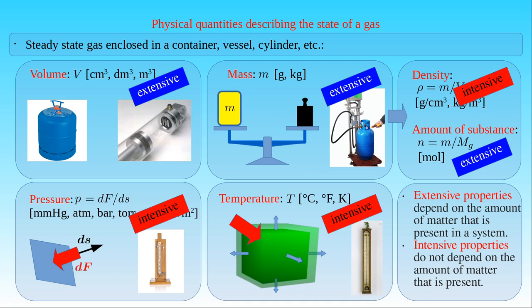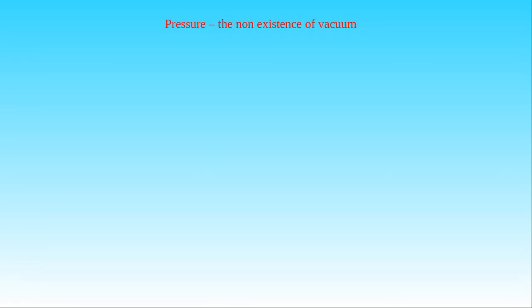Now we have introduced and classified the basic physical quantities which are used to describe the physical state of gases. It is more or less clear how to determine the extensive properties of a gas such as volume and mass. It is also straightforward to compute the density and the amount of substance, if the volume and the mass of the gas are given with its atomic or molecular weight. But pressure and temperature are intensive properties, and it is not so obvious how to measure such quantities. Therefore, we present the basic concepts related to pressure and temperature either in a historical context or in the context of everyday life, which helps us to understand how the measurement techniques have been developed.